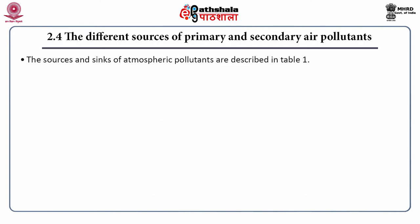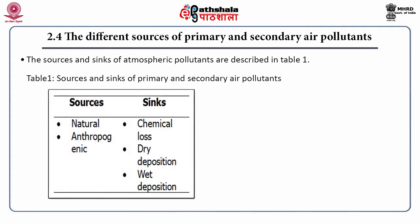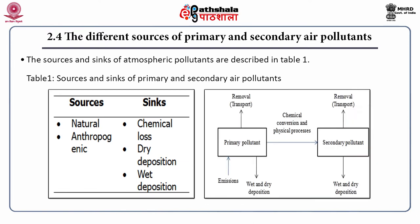Different sources of primary and secondary air pollutants are described in a table. The sources are natural and anthropogenic, while the sinks are chemical loss, dry deposition and wet deposition. Primary pollutants are emitted, then removed by sinks via transportation or wet and dry deposition. Through chemical conversion and physical processes, primary pollutants are converted to secondary pollutants, which also sink by wet and dry deposition and transportation.